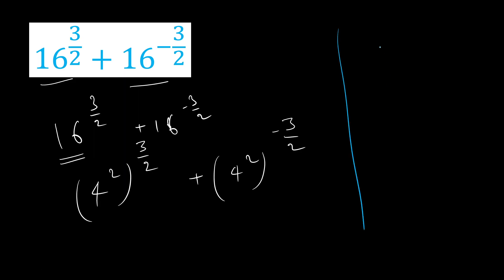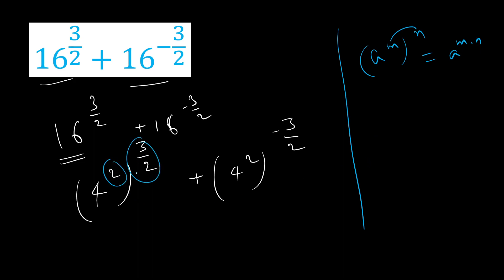Now here we will use our property of exponents: k raised to the power m, raised to the power n, is nothing but k raised to the power m into n. So we can multiply these two powers — 2 and 3 by 2, and similarly 2 and minus 3 by 2.